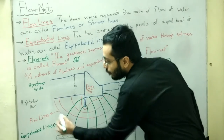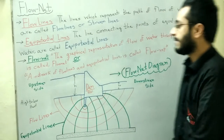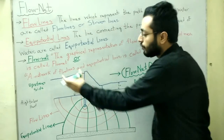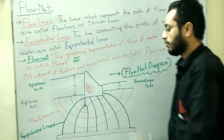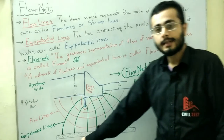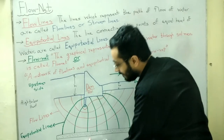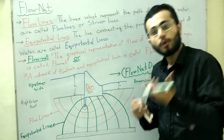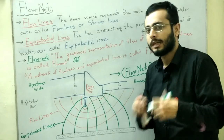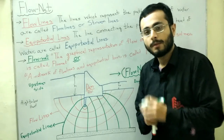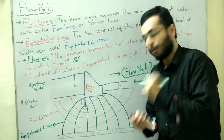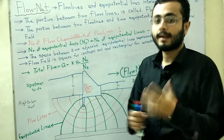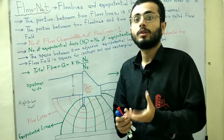So basically, flow net is the combination of flow lines and equipotential lines, representing how water flows from the upstream side to the downstream side. The bottom structure shown is the rock stratum — it can be sedimentary, igneous, or any other kind of rock.